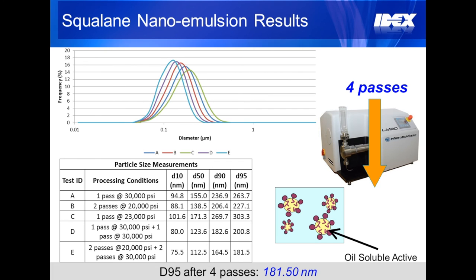After the initial filtrability tests were completed, test E was selected for the bacteria challenge test. Sample E was repeated over 20 times, achieving near-identical results, with a standard deviation of around 5 nanometers.